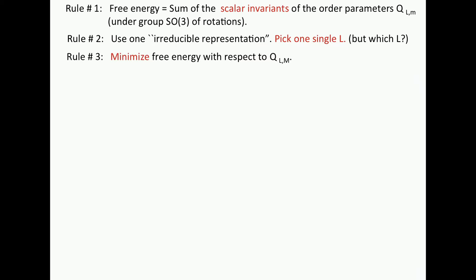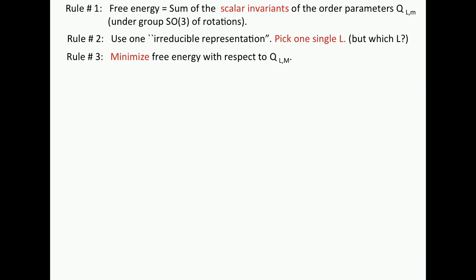And rule number three. Minimize the expression you get with respect to Q L M. So that's the rules. They've proven to be very useful for finding out about symmetries. So we're not going to discuss these three rules, but these are the ones we're going to apply.